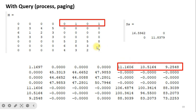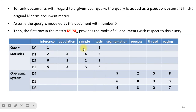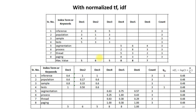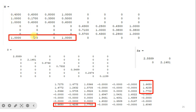For weighting, the term frequency for each document is taken directly. For example, in D1 the keyword 'inference' appears 2 times, 'population' 3 times, 'sample' 3 times, and 'test' appears as well. TF-IDF can also be applied. Here, because N=6 and all documents contain the keywords, IDF would be the same for all documents, so only the normalized term frequency is used. Based on this normalized distance, SVD is applied and values like 2.5 and 2.14 are obtained.